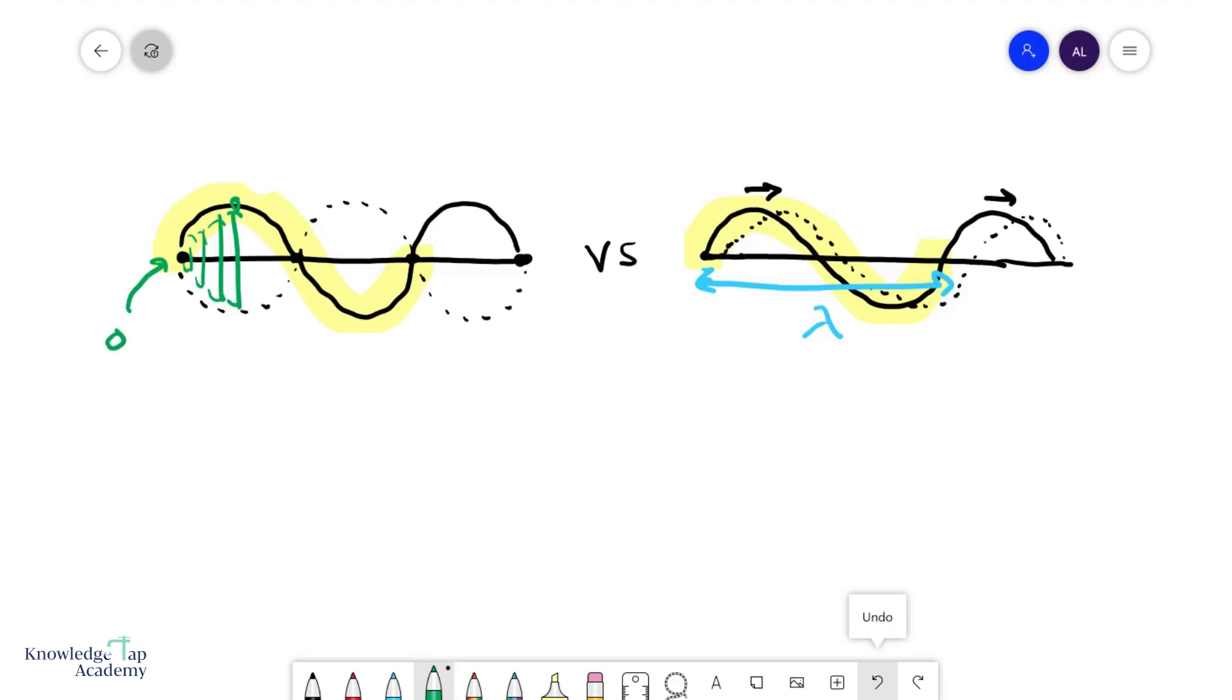Zero at the nodes, max at the antinodes—every particle has a different amplitude. But the amplitude here is the same for everyone. Now, one more difference to talk about, and that's the phase.